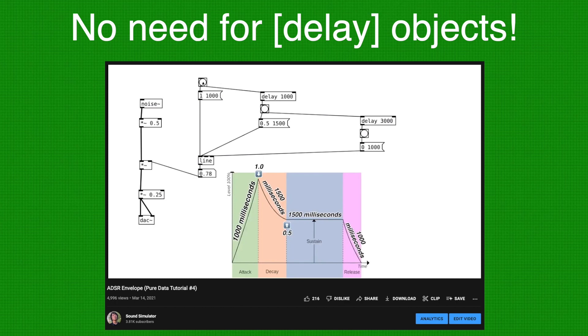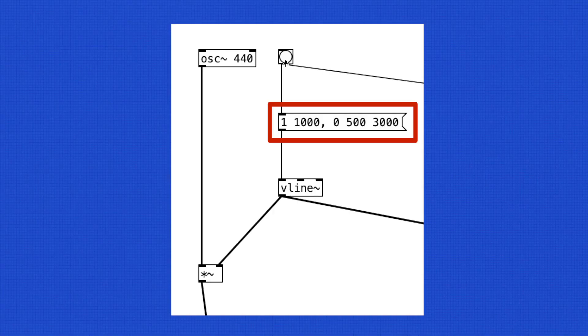Another key difference is that we don't have to use delay objects with vline tilde in order to create a complex envelope. All we need is one single message object.